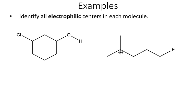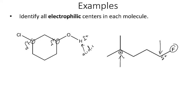For electrophiles, we're looking for partial positive charges or full-on carbocations. Looking at the one on the right first, I see a carbocation — that is definitely going to be an electrophile, it definitely wants more electrons. Also, the very electronegative fluorine makes the carbon it's attached to partially positive, so that will be another electrophile. On the left molecule, the carbon attached to the chlorine is going to be partially positive, and the carbon attached to the oxygen is also going to be partially positive. The hydrogen is also partially positive, but a partially positive hydrogen we would call acidic rather than classifying it as an electrophile. So I have two electrophilic centers in that molecule and two electrophilic centers on the right.